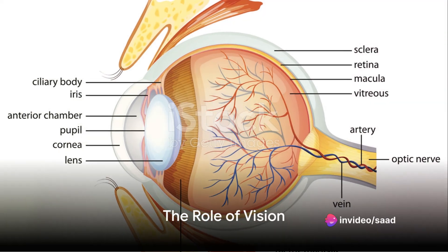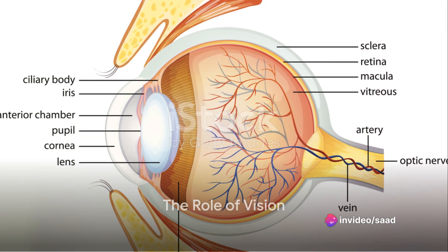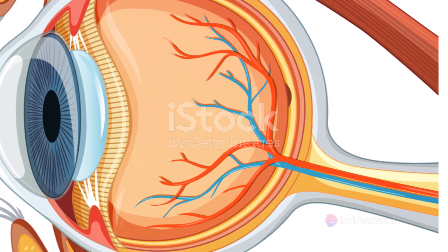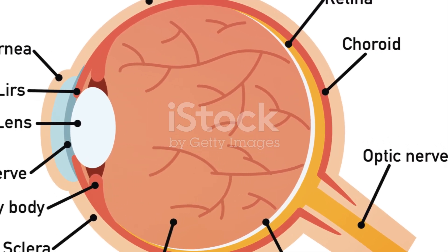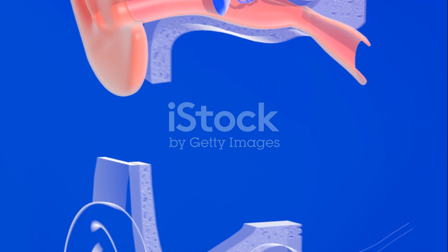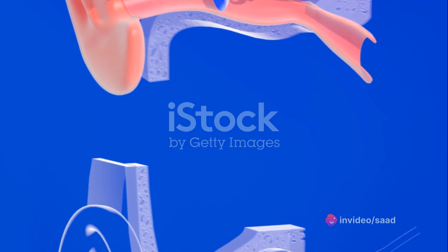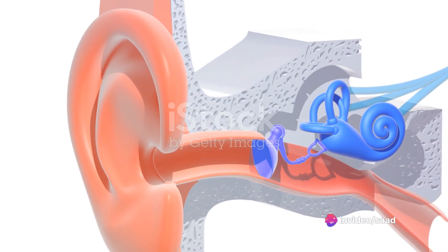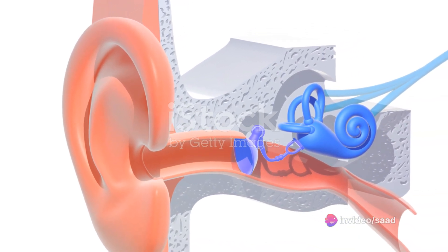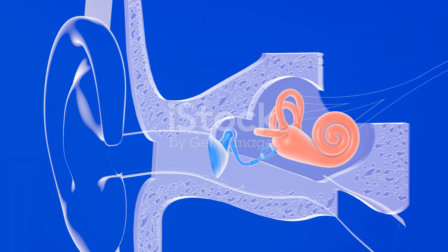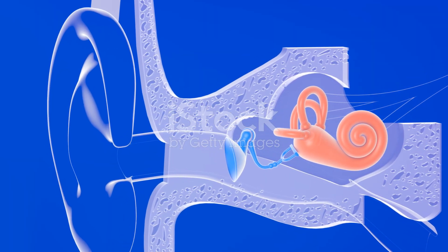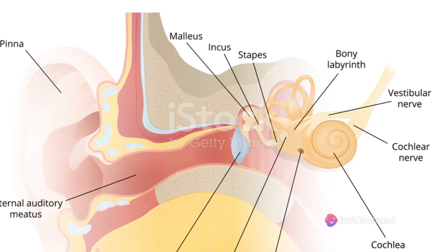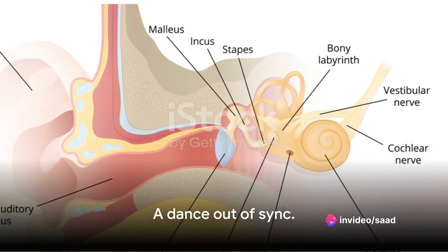But the story doesn't end there. Our eyes, another crucial player in this performance, contribute their own narrative. They relay visual cues to the brain, aiding in the interpretation of our surroundings. However, when the signals from the inner ear and the eyes diverge — say, during a spirited spin — a discordant note is struck. It's this divergence that gives rise to the sensation of vertigo. The brain, confronted with conflicting signals, perceives a spinning motion that may not align with the visual reality. It's a harmonious dance gone slightly off-key.